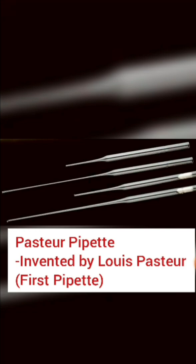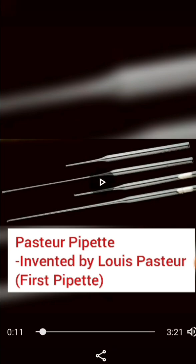This is the Pasteur pipette, which was invented by Louis Pasteur in the 1940s. It is made of glass — the front part is made by melting glass — and the top part has a cotton plug to prevent contamination. This is the most simple, first invented pipette, known as the Pasteur pipette.